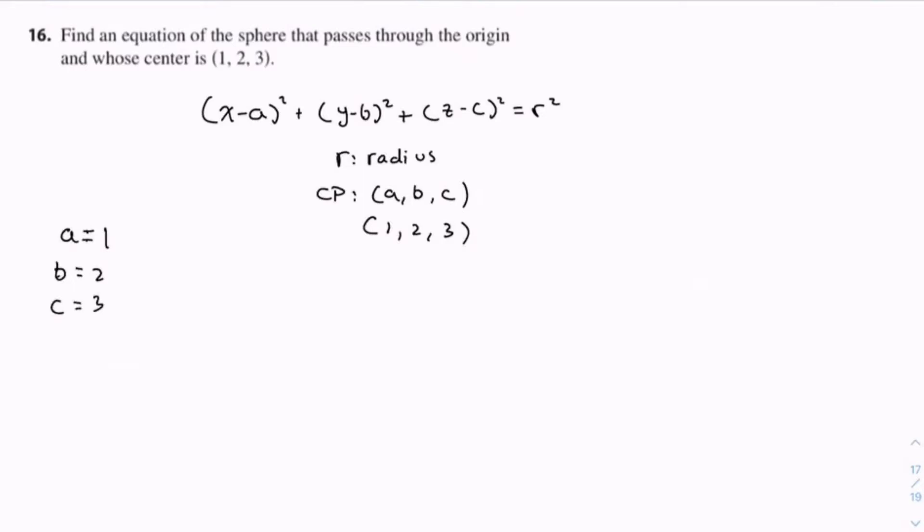So, what we don't have is r, the radius. However, we can find this because we have a center (1, 2, 3) and we know this sphere passes through the origin.